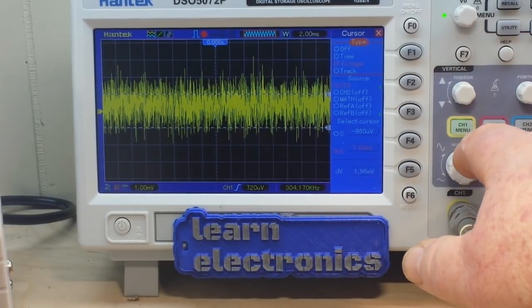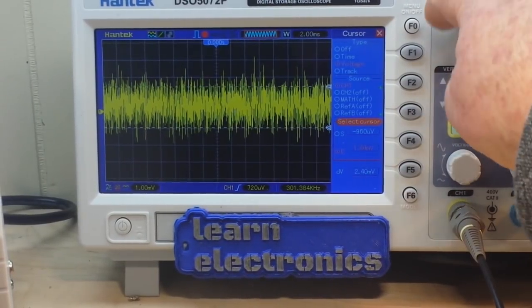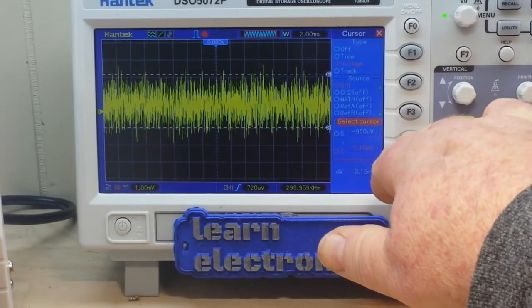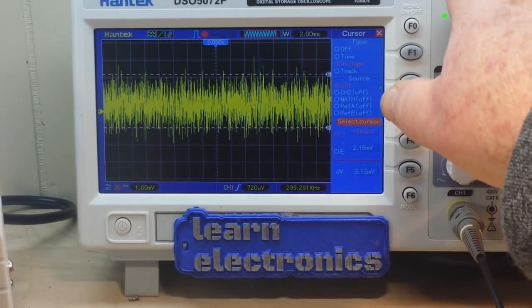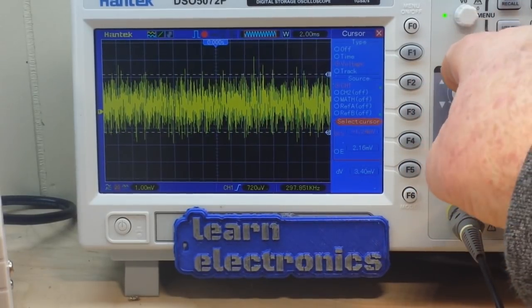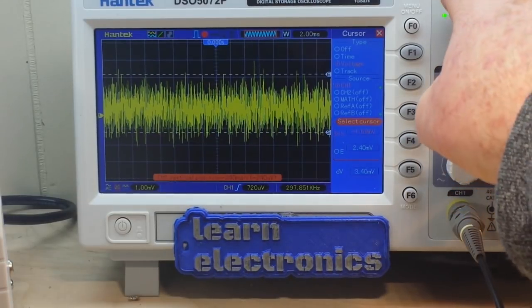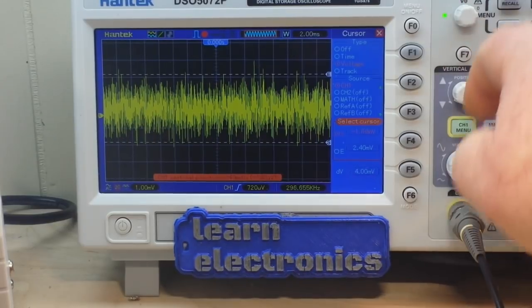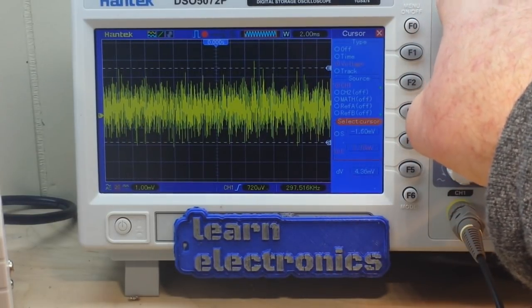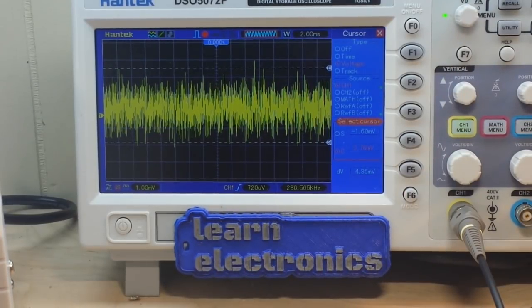And then if we go to cursor, voltage. We'll get our cursor set here for a nice average. Oops. Rotate the wrong knob.